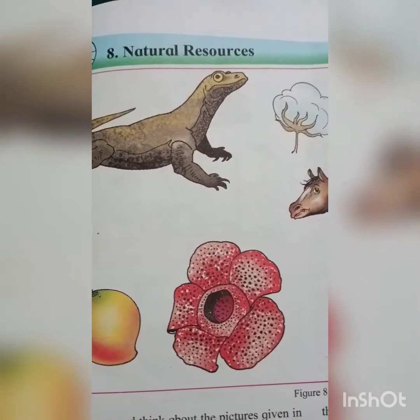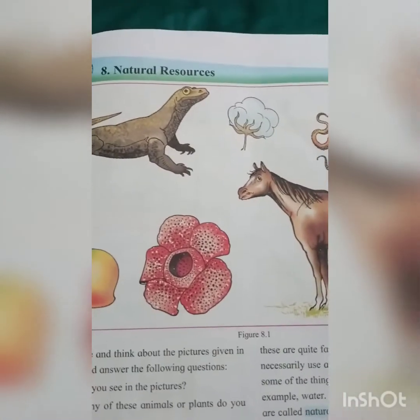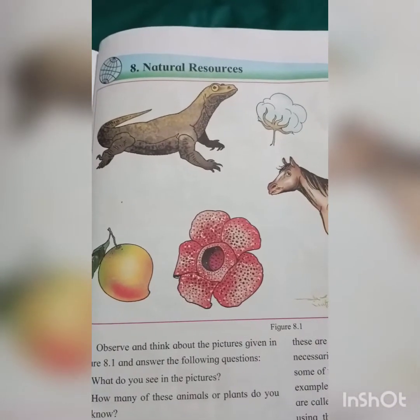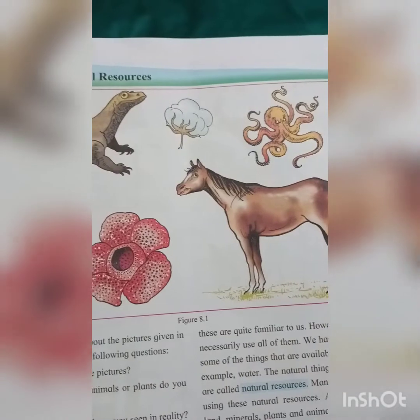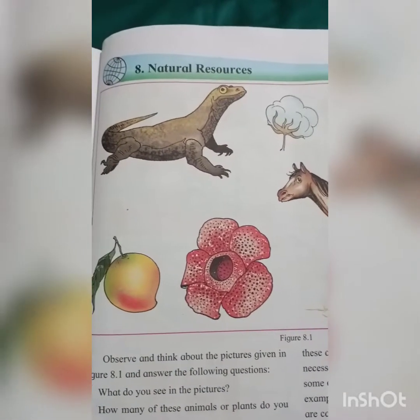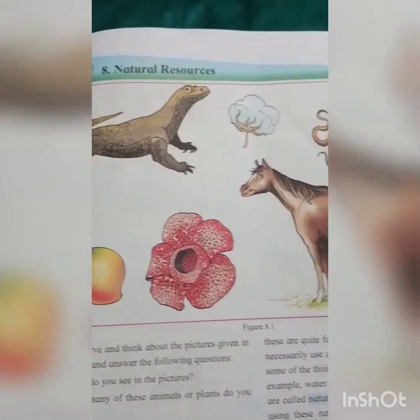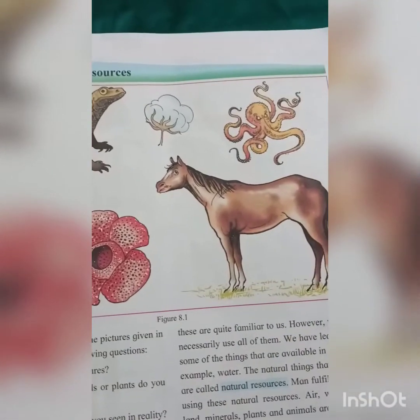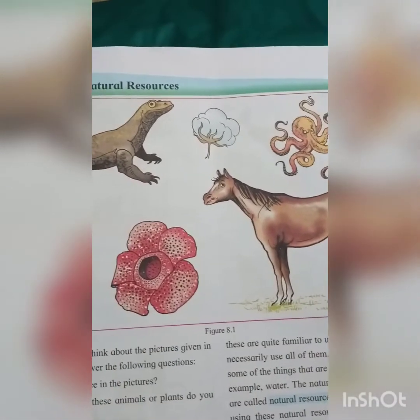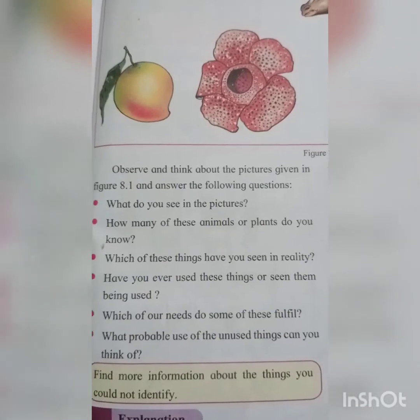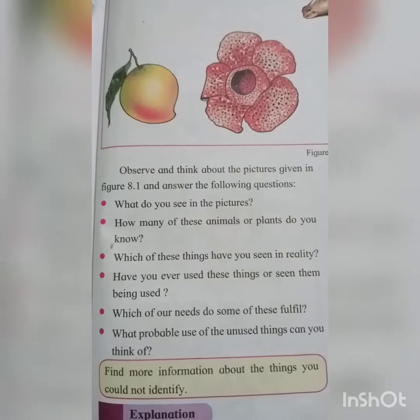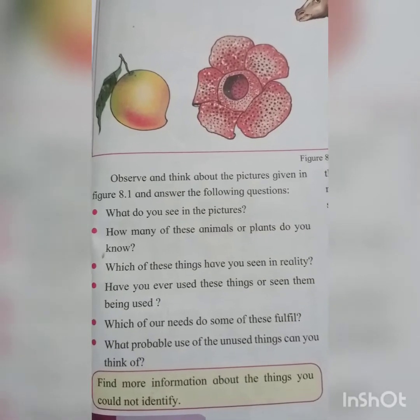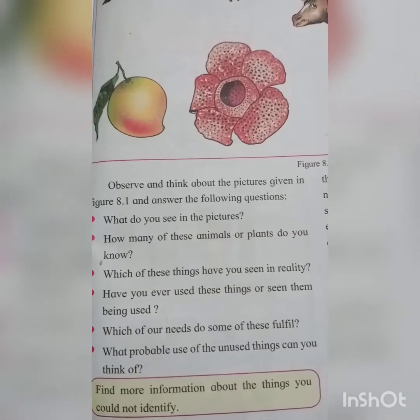In the previous chapter 7, we learned about rocks and rock types. Now in figure 8.1, you can see different types of flowers, plants, fruits, and animals — lizard, mango fruit, flower, cotton, octopus, horse. Observe and think about the pictures in figure 8.1 and answer the following questions. First: what do you see in the picture? You see different types of animals and plants.